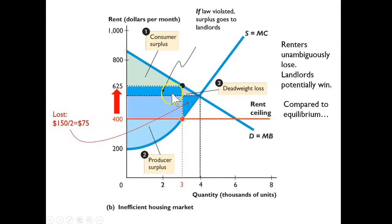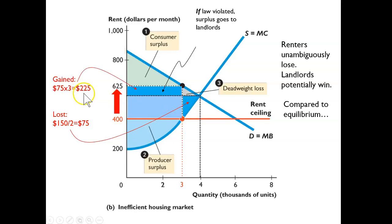An eyeball test is not so clear in this case — is the amount of producer surplus gained greater than the amount lost? When we do the calculations, it turns out to be pretty clear: the amount gained by the producers — the landlords — is greater than the amount they lost. So overall, if a price ceiling is imposed but is not enforced, in this example the landlords actually win out of the creation of a black market.